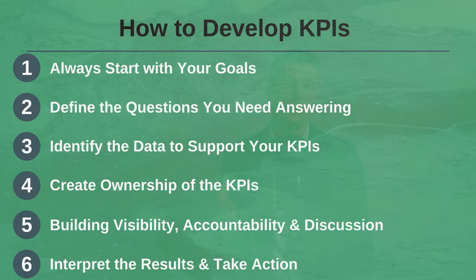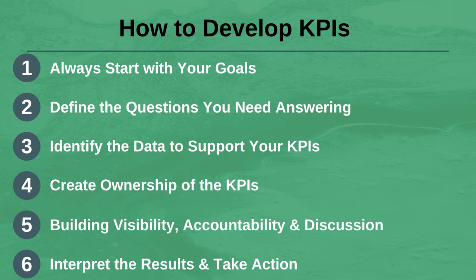To recap, the six steps for how to develop key performance indicators are: first, always start with your goals; second, define the questions you need answering; third, identify the data to support your KPIs; fourth, create ownership of the KPIs; fifth, build visibility, accountability and discussion of the KPIs; and sixth, interpret the results and take action.